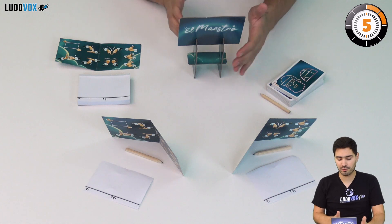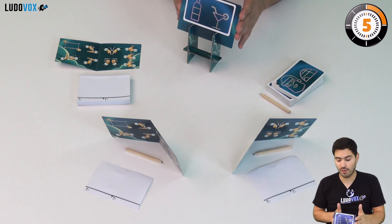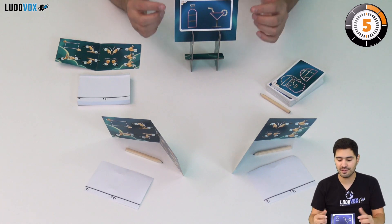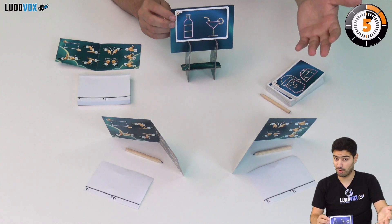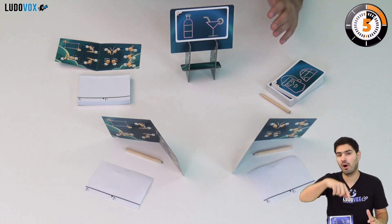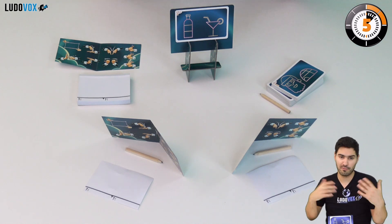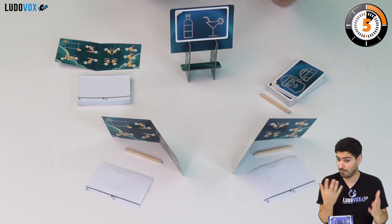So I am the maestro in this case, and I have my stand with a card on it. This card bears shapes and items that I need the other players to draw, but I can't speak. I will only perform with my hands and my fingers.